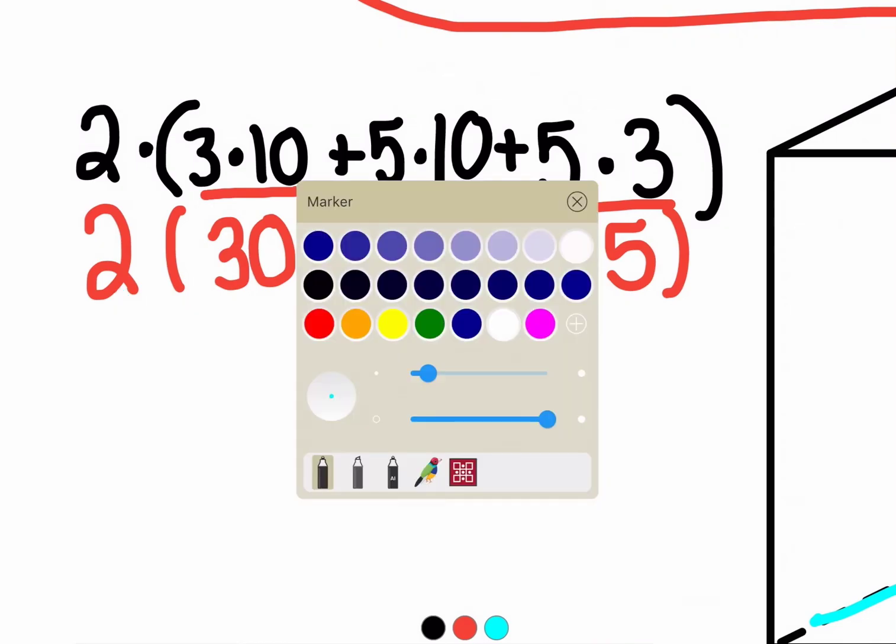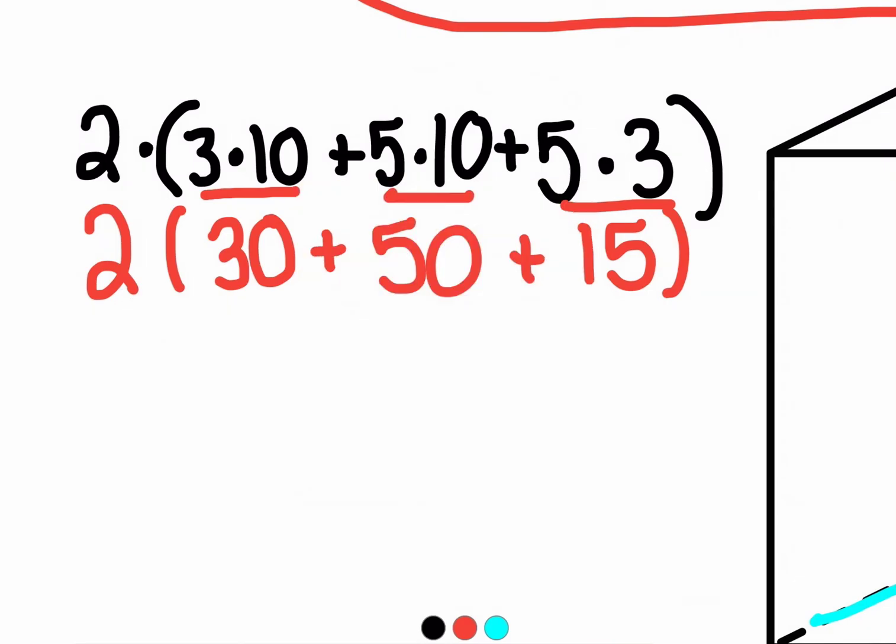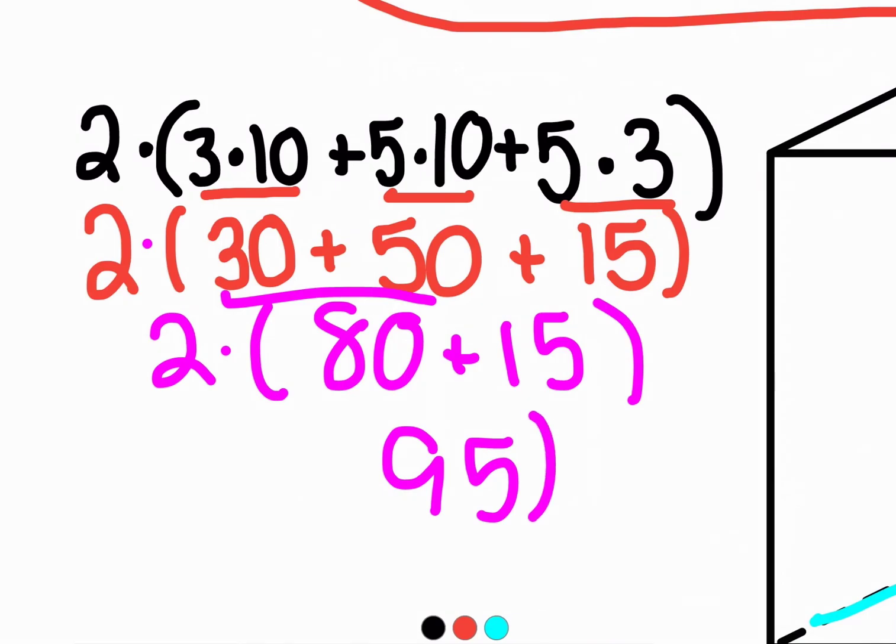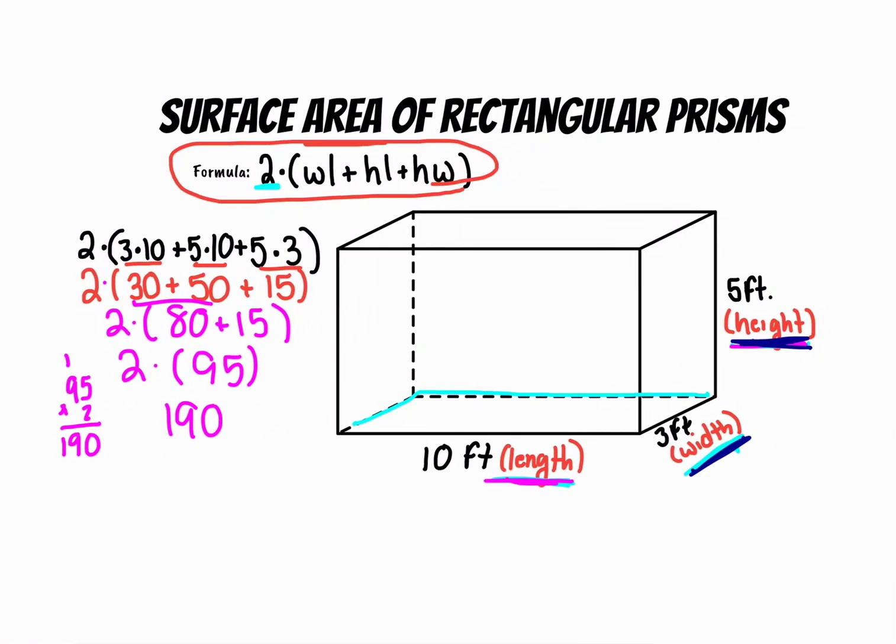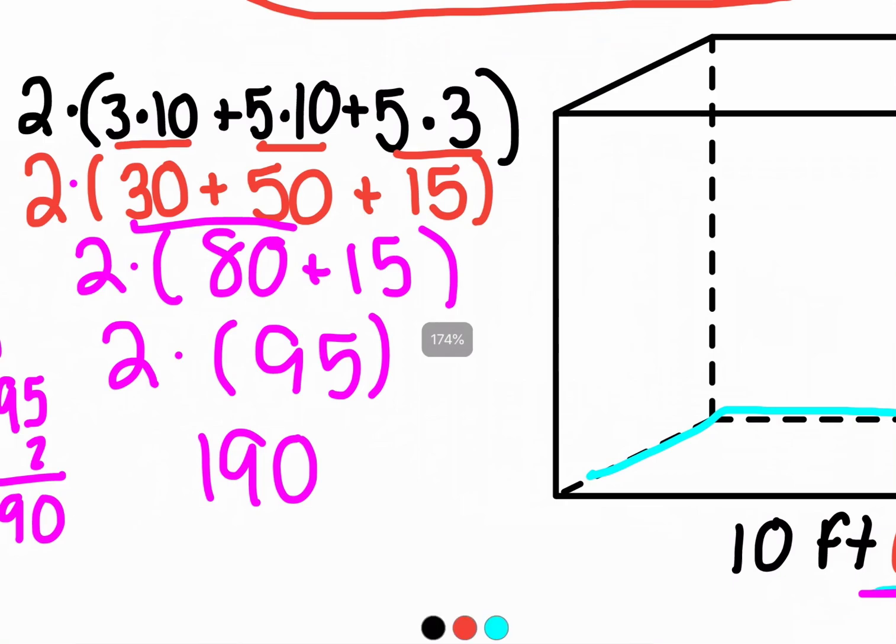But if I'm following the order of operations, I say, okay, 50 plus 30 is 80. 80 plus 15, bring down everything I'm not using. 80 plus 15 is 95. And I calculate my last thing, two times 95. What would that be? I'll work it over here. 95 times 2. 2 times 5 is 10. Carry the 1. 2 times 9 is 18. Plus 1 is 19. So my answer is 190. But 190 what? I'm calculating it in feet. So it's feet squared, because I'm still talking about area.